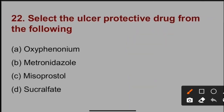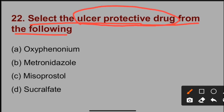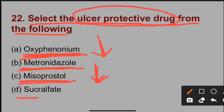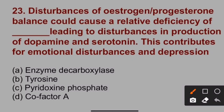Question 22: Select the ulcer protective drug from the following. Oxyphenonium is an anticholinergic drug that reduces acid secretion. Metronidazole is an anthelmintic drug that acts against H. pylori. Misoprostol is a prostaglandin analogue that inhibits gastric acid secretion. Option D — sucralfate — is an ulcer protective drug. So option D is correct.